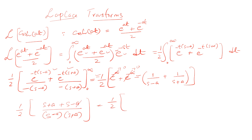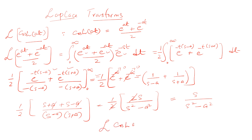So we get 1/2 times (s+a + s-a) / (s²-a²). The +a and -a cancel out, leaving 2s / (s²-a²), and the 2s and the 1/2 cancel, giving s / (s²-a²). So the Laplace transform of cosh(at) is s / (s²-a²). That's all for now — we'll meet in the next video lecture soon. Goodbye!